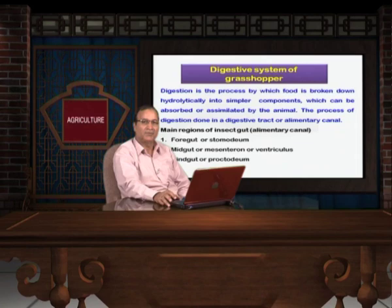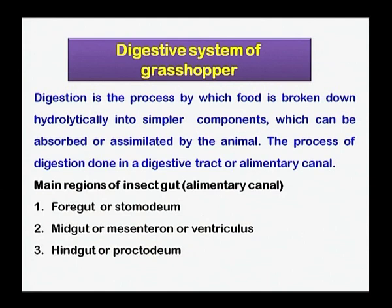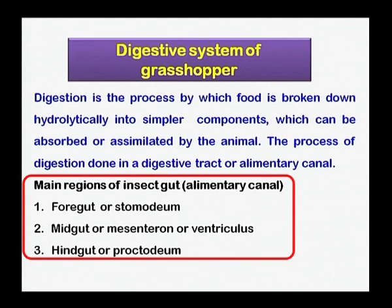Starting from the first, that is the digestive system. As we know, digestion is a process in which food is broken down into a form that it can be absorbed easily. The digestive system is made of a tube-like structure known as the alimentary canal, which is divided into three parts: foregut or stomodium, midgut or mesentron or ventriculus, and the third part is hindgut, also known as proctodium.